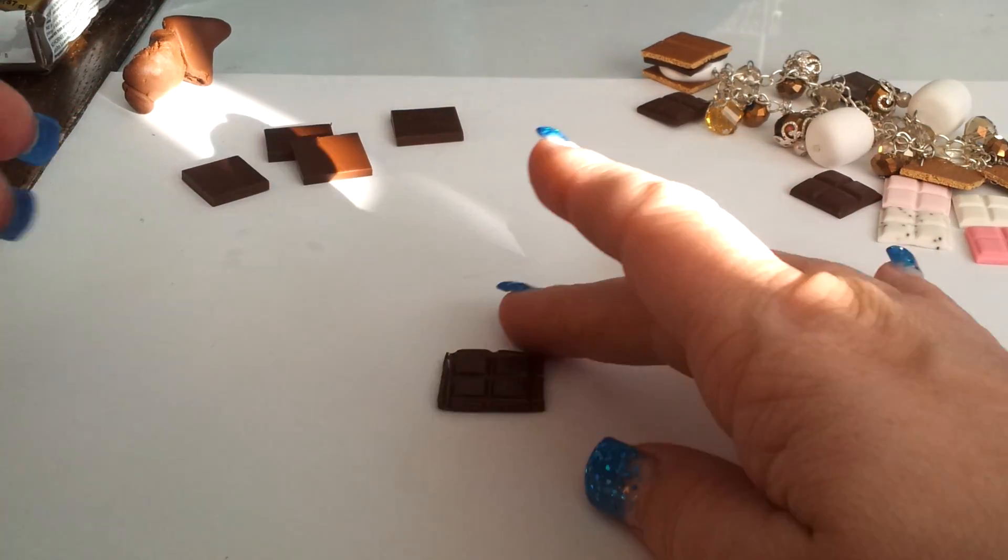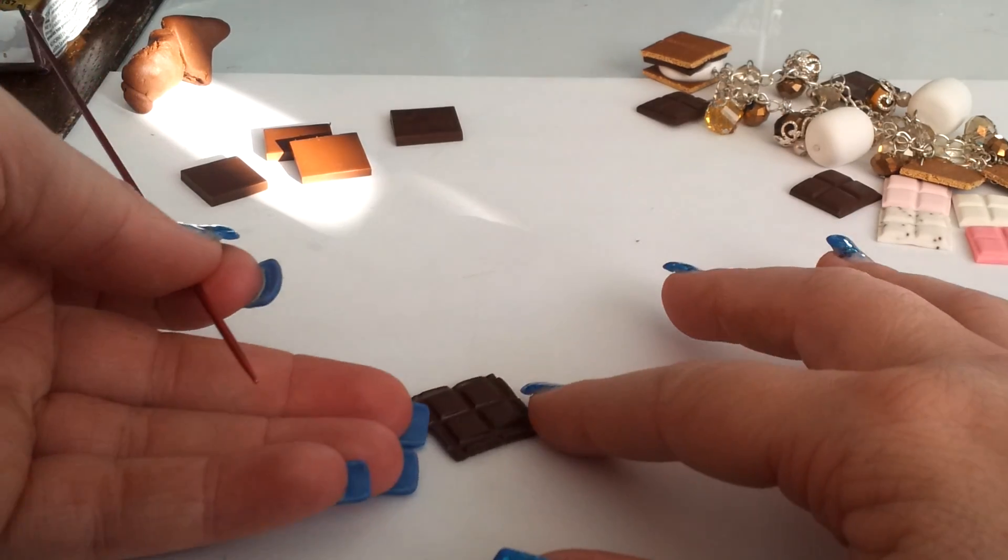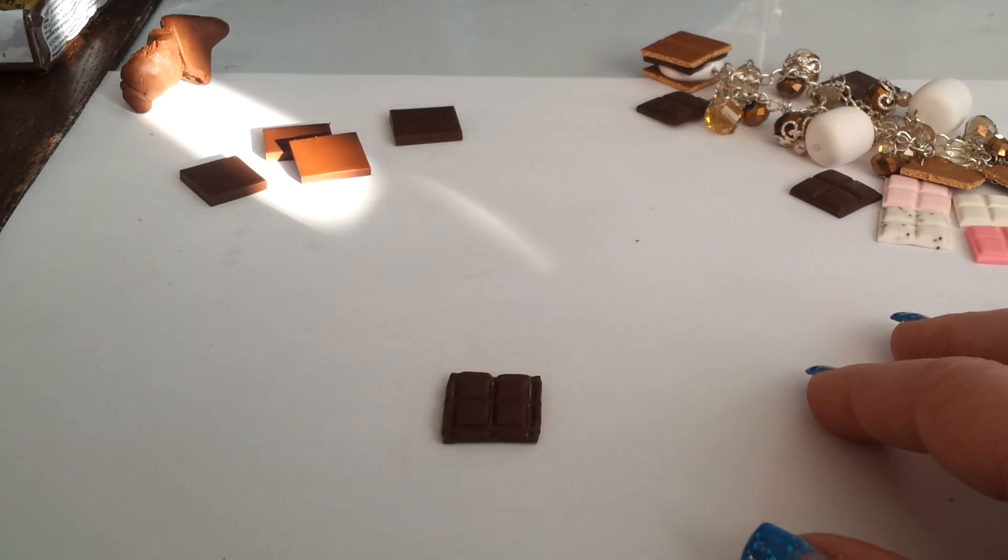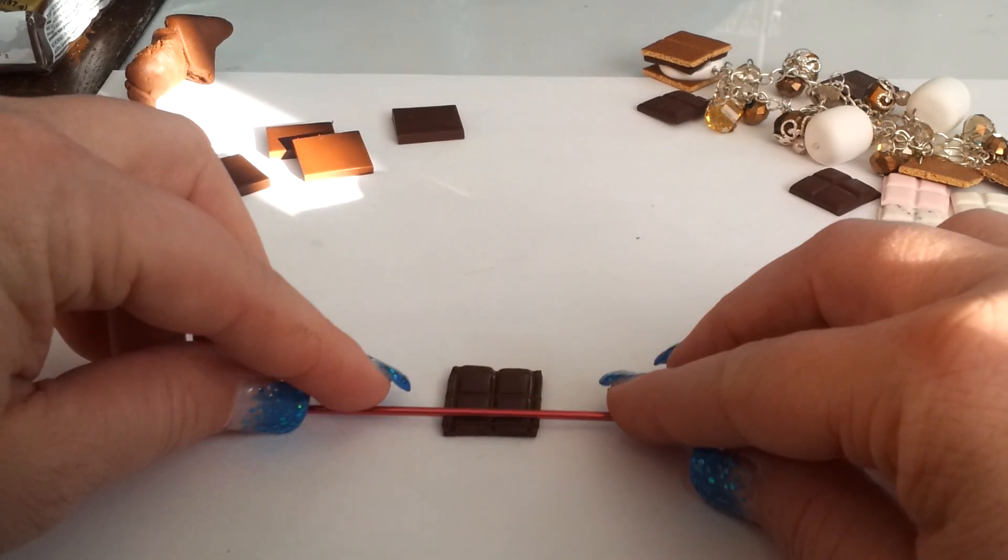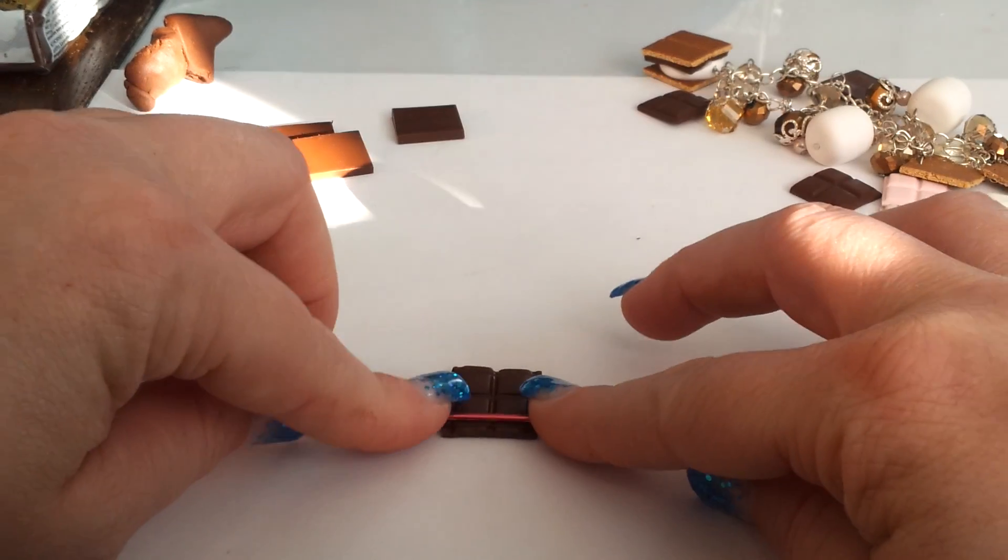And here we go. So that's it. Now if you notice that one set is a little bit more rectangular than perfect square, you could just go in a little bit further and press again.